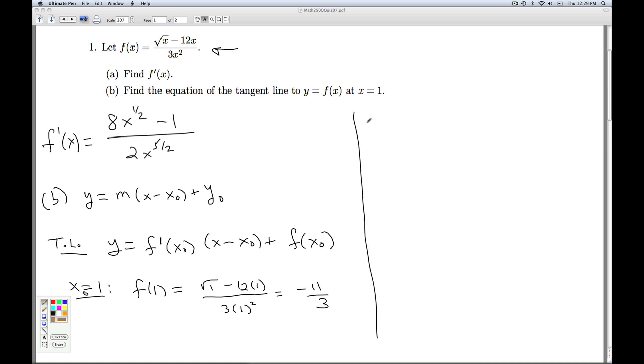And then for the slope, that's going to be f prime at 1, so I'm going to plug 1 into this equation. It gives me my slope: 8 times 1 to the 1/2 minus 1 divided by 2 times 1 to the 5/2. 1 to the 1/2 power is 1, so I get 8 minus 1 on the numerator. 1 to the 5/2 power is 1, 2 in the denominator. And so that simplifies to 7/2.